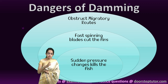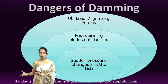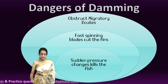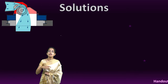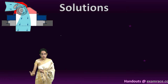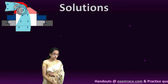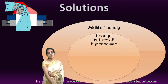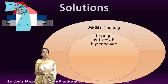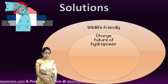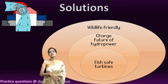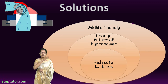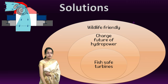There needs to be a proper methodology to develop sustainable ways forward — and that is where this class comes in. Understanding the solutions is very important. We need to develop a solution which is definitely wildlife-friendly, which can protect the fish and change the future of hydropower generation. What we need is a fish-safe turbine.